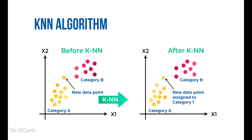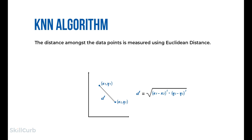Suppose there are two categories A and B, and we have a new data point X1 — in which category does it lie? With the help of KNN, we can easily identify the category of a particular data set. To find the distance between data points, KNN uses the Euclidean distance formula based on the Pythagorean theorem. This is one of the many algorithms in which the distance metric is used.